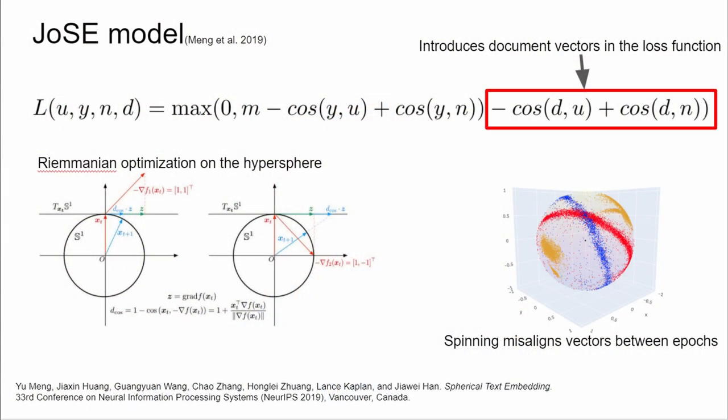JOSE is an interesting embedding model from 2019, which we would like to use with domain adaptation. However, two of its features inhibit this.